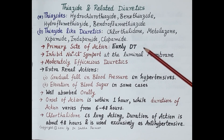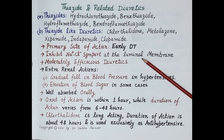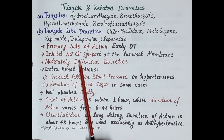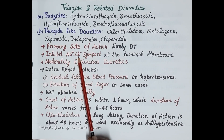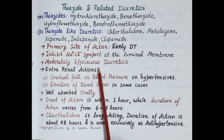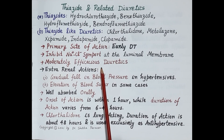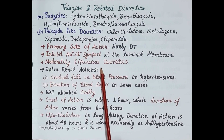The primary site of action of these drugs is the distal convoluted tubule. They inhibit the sodium-chloride symport at the luminal membrane of the early distal tubule, thereby inhibiting reabsorption of sodium and chloride from the filtrate into the luminal epithelial cells. These are moderately efficacious diuretics because 90 percent of the glomerular filtrate is already reabsorbed before reaching the distal tubule.